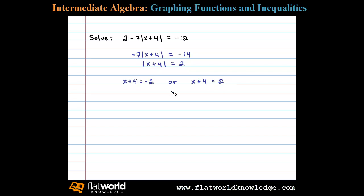Now we can solve each of these linear equations separately. Here we just subtract 4 on both sides, and that gives us x equals -6. Subtracting 4 on both sides of the second equation, we have x equals -2.